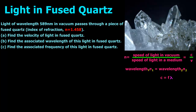The first part says find the velocity of light in fused quartz. So I've got this equation here: N, which is the index of refraction, is going to equal the speed of light in a vacuum divided by the speed of light in a medium. In this case the medium is the fused quartz. So that equals C, the speed of light, which is 3 times 10 to the 8th meters per second, divided by velocity.